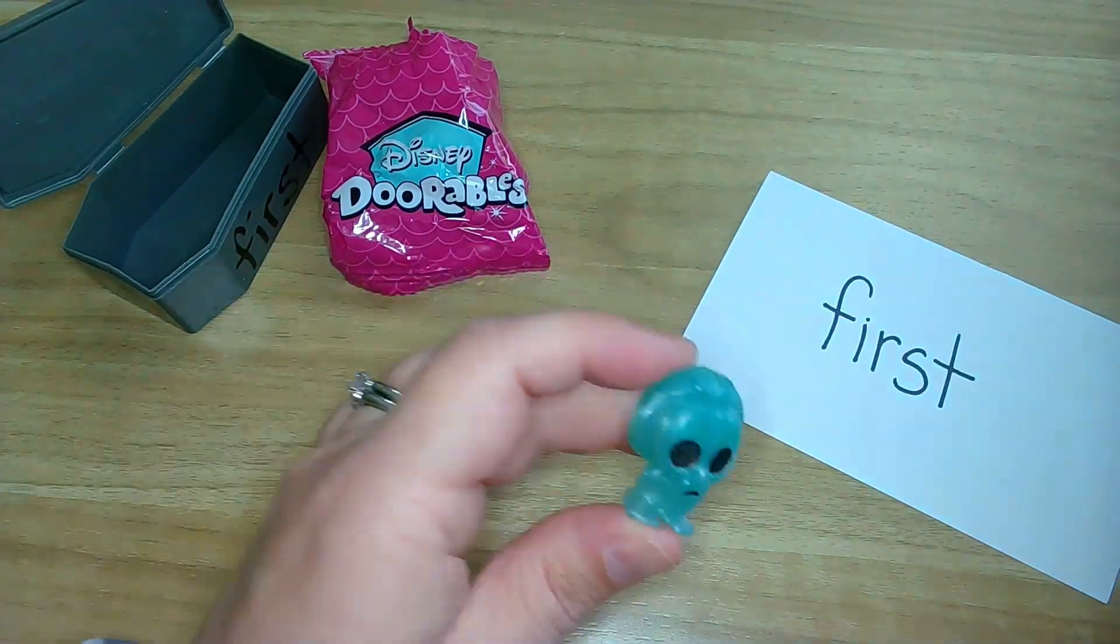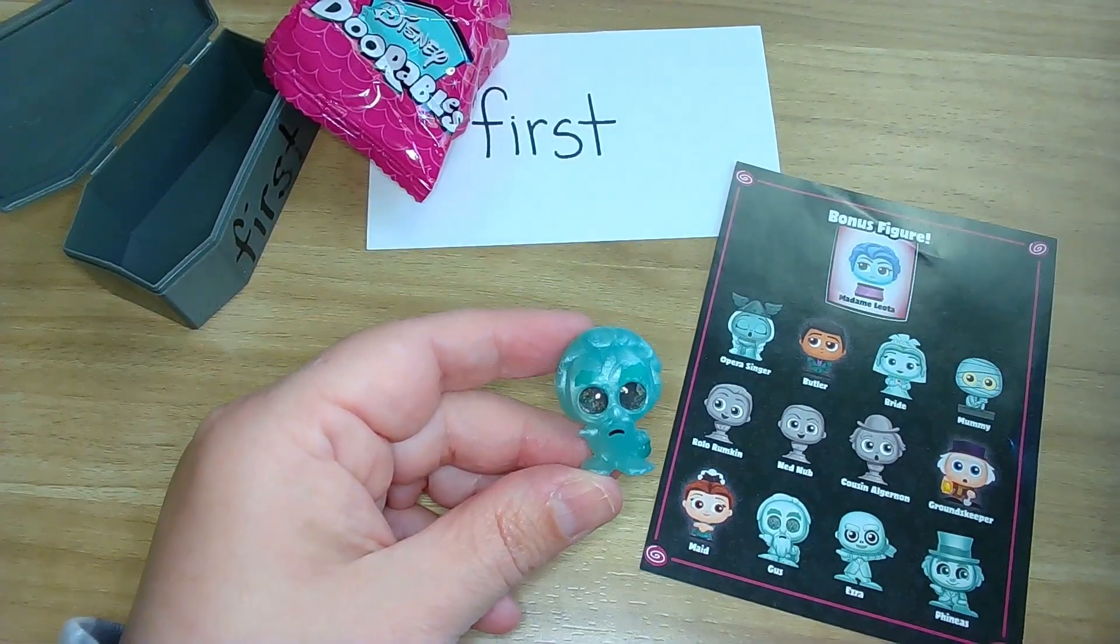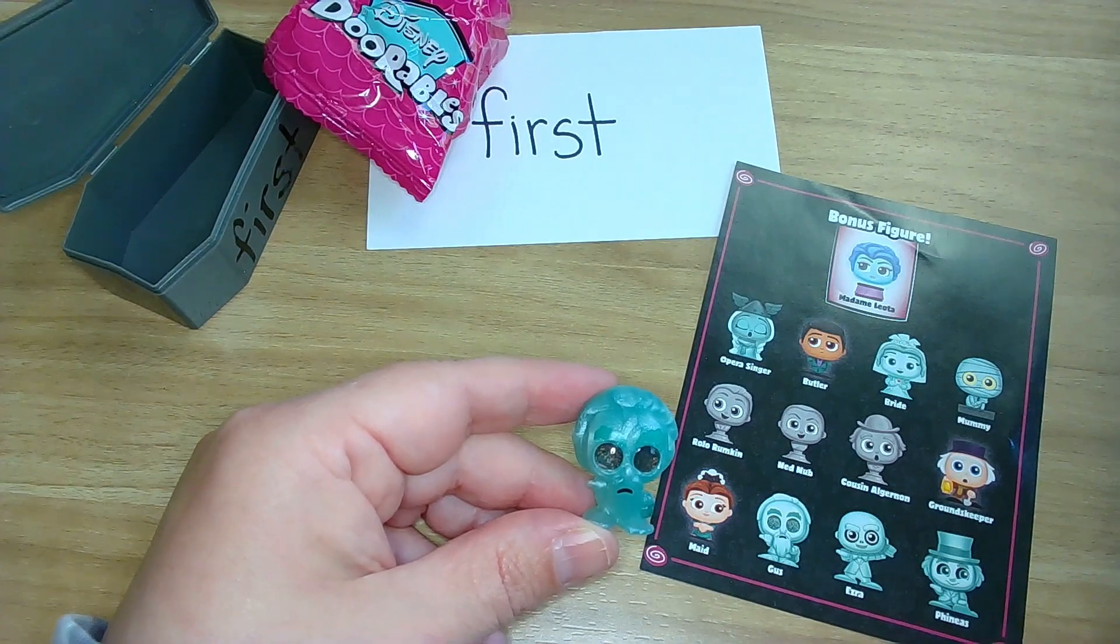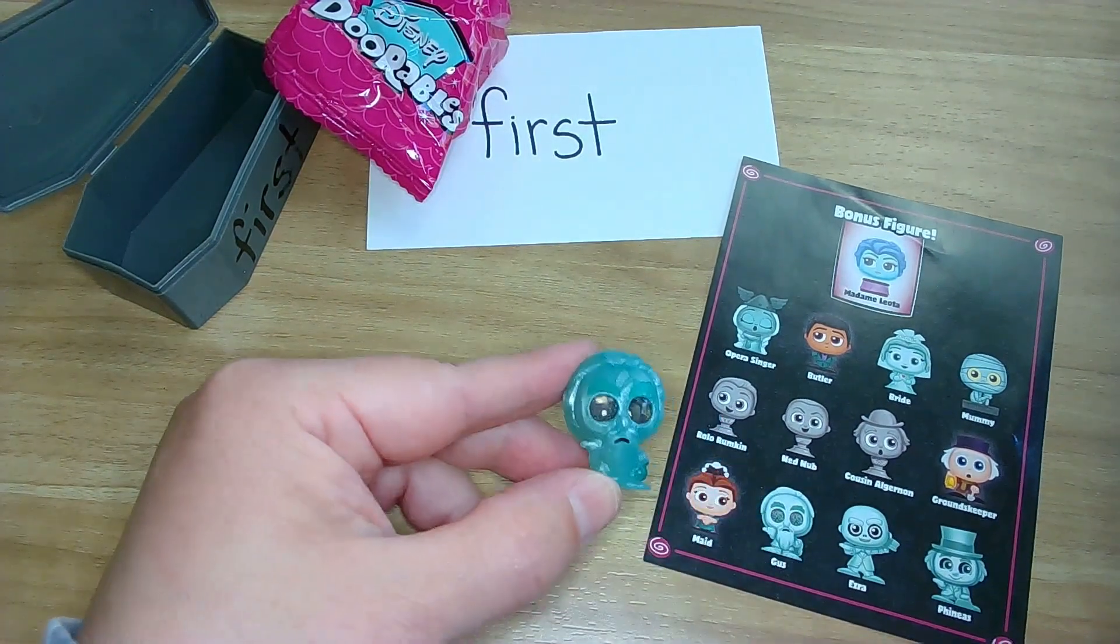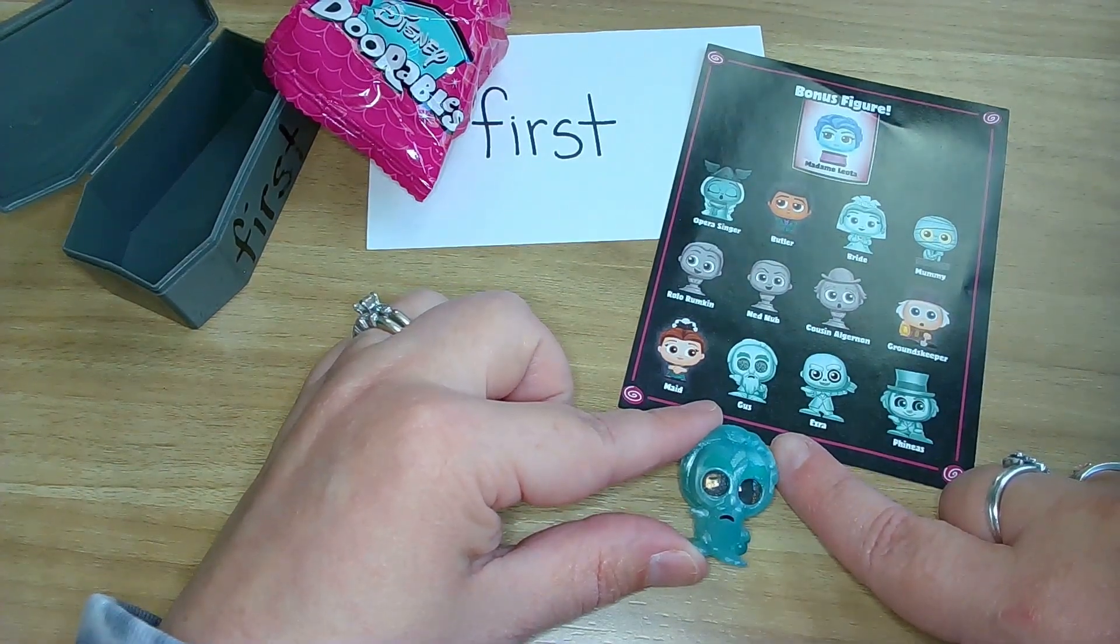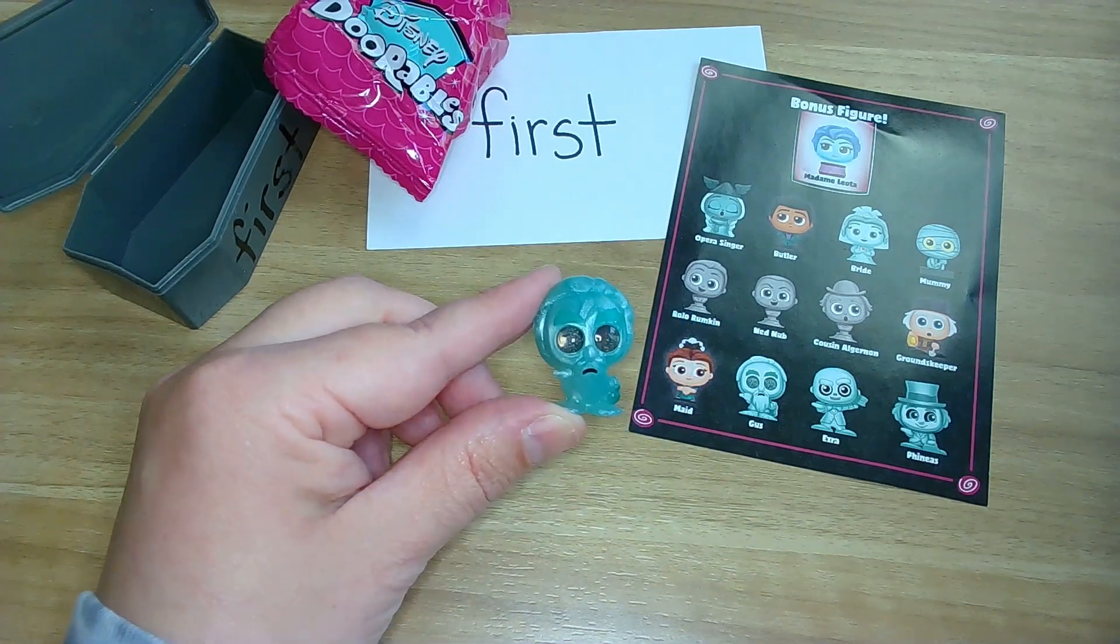Okay. What is the first Disney Dorable we got? Oh my goodness. Okay. Now look. We have our handy dandy cheat sheet. So that we can figure out who it is. Friends. Look at this. Who is this? Oh, you're right. It's this one right here. His name is Gus. Sorry. You couldn't see that. His name is Gus. Looks like he's one of the hitchhikers. Okay. Let's see what's next.